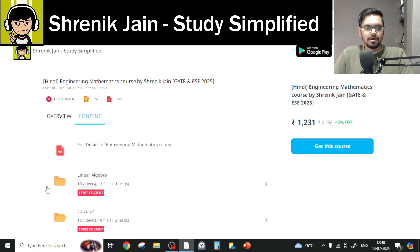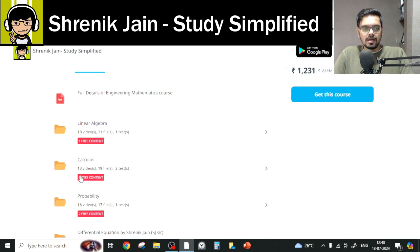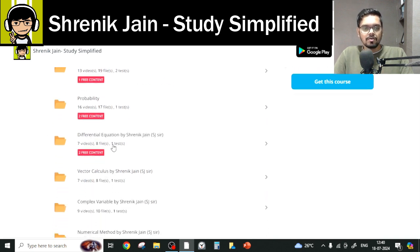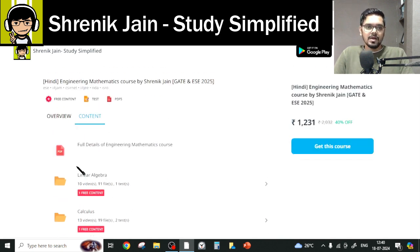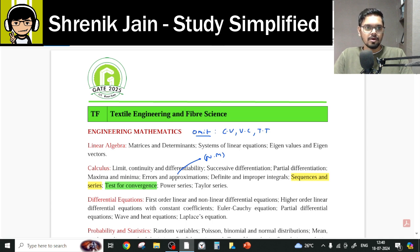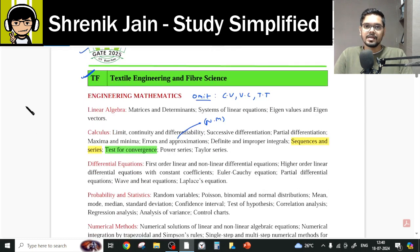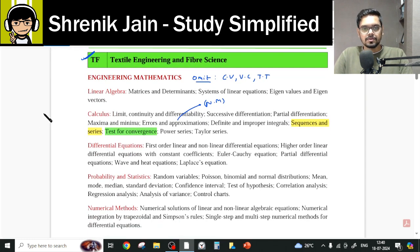In total, I have taught eight chapters: Linear Algebra, Calculus, Probability, Differential Equation, Vector Calculus, Complex Variable, Numerical Method, and Transform Theory. But you do not have to study every chapter. Why? Because as per the official IIT Roorkee 2025 syllabus for Textile Engineering and Fiber Science, you do not have all the chapters.